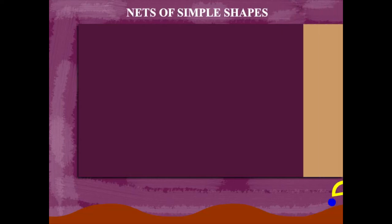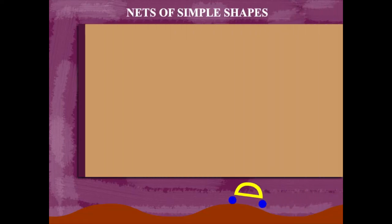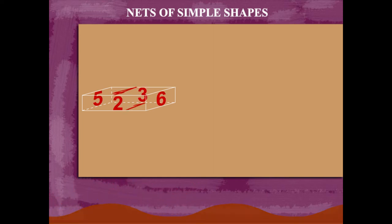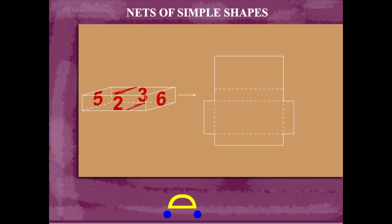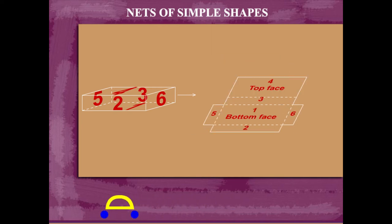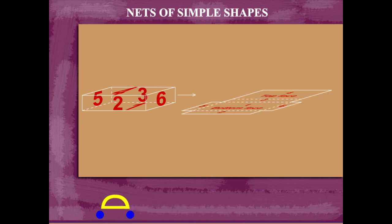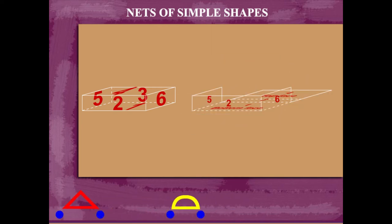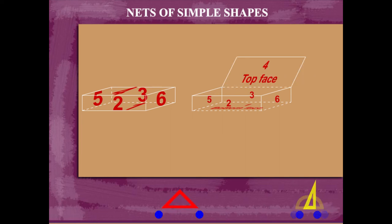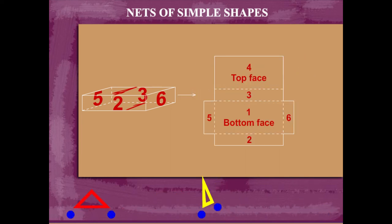Nets of Simple Shapes. Here is a 3D rectangular block with 6 sides. If you open it up, you can see the 6 sides in their 2D form that fold to form this solid shape. Here you can see the shape folding.